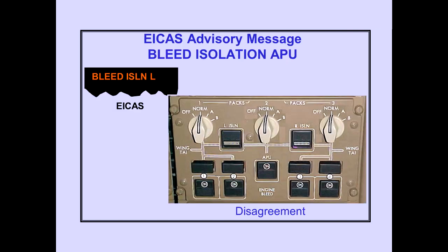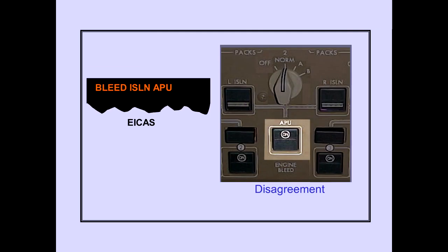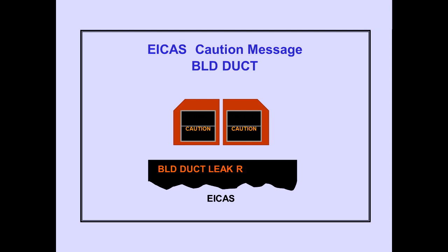The ICAS advisory message 'bleed isolation' is displayed when there is a disagreement between the isolation valve switch and valve position; the respective valve light also illuminates. The ICAS advisory message 'bleed isolation APU' is displayed when there is a disagreement between the isolation switch and commanded valve position; the valve light also illuminates. The ICAS caution message 'bleed duct leak' is displayed when a bleed air leak is detected in the respective bleed air duct.